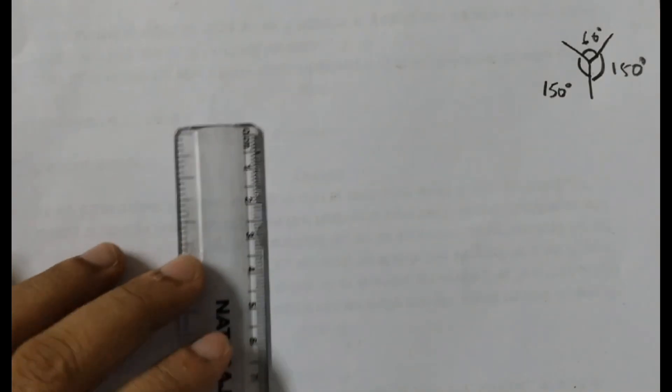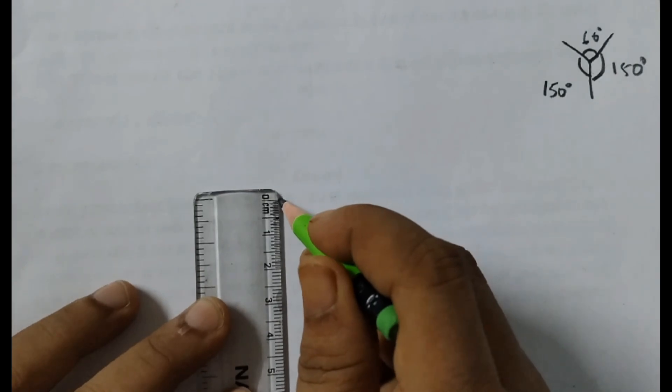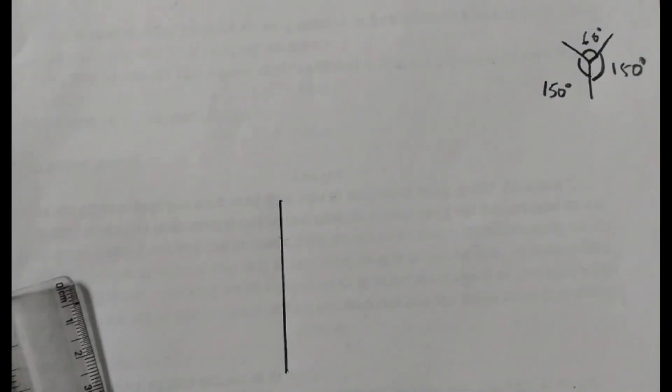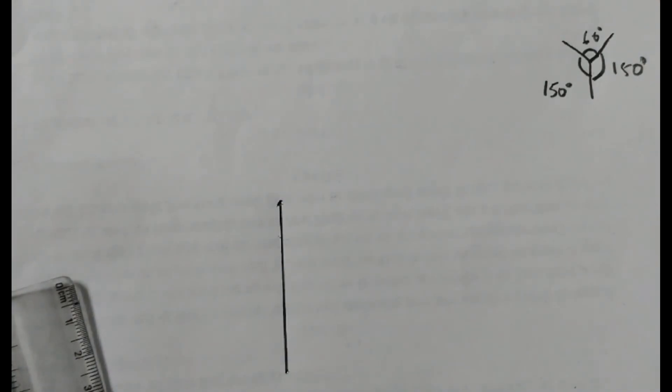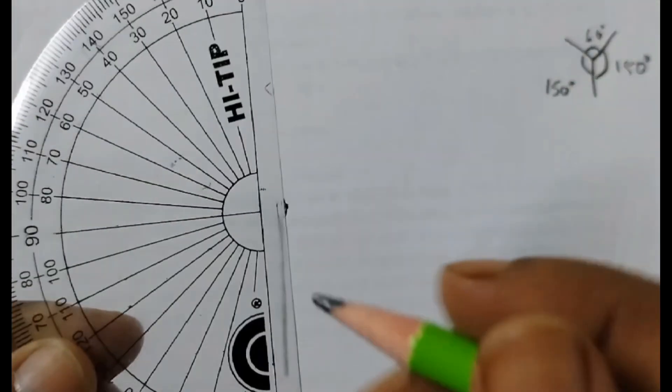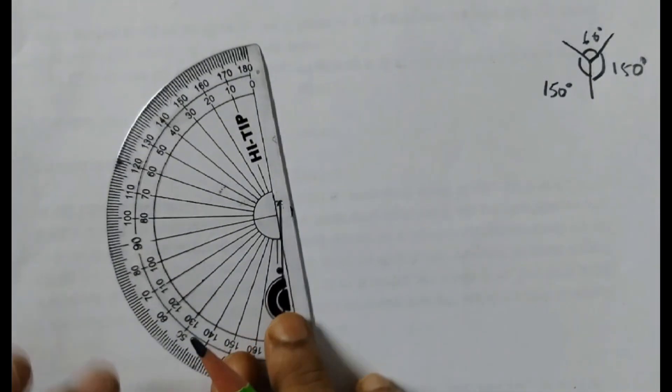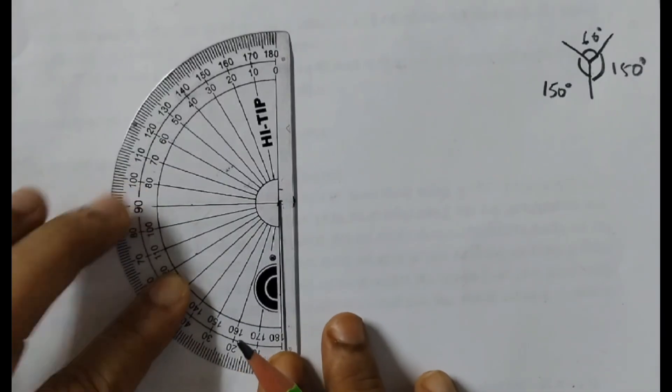For this you need a ruler and a protractor. First draw a line, let's say I take it as 5 cm. Now I will take my protractor and this is the vertex. Place your protractor in such a way that this point here coincides with this point. Place your protractor like this.